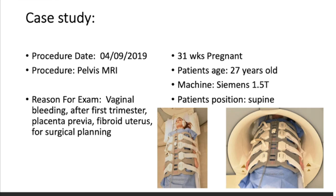The case study is about a pregnant female who came to the MRI department on her 31st week of pregnancy for surgical planning. She was complaining of vaginal bleeding after the first trimester, with also placenta previa and fibroid uterus. The procedure was performed on a 1.5 Tesla scanner with the patient in supine position.